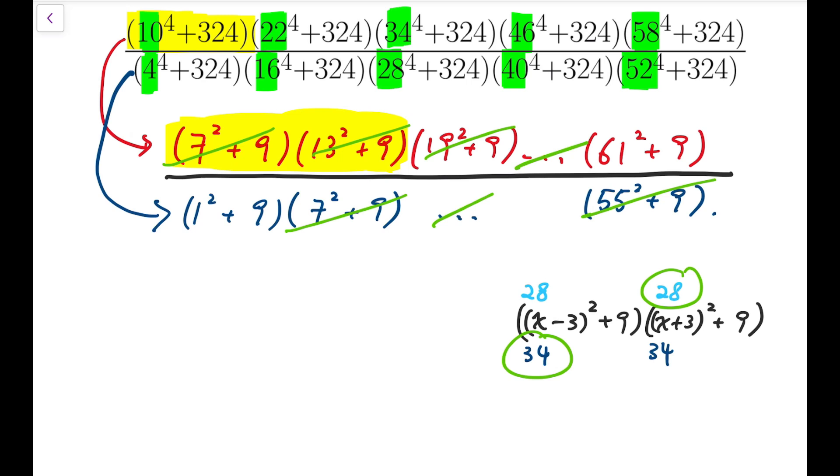And what's left will simply be the largest component, 61 squared plus 9, divided by the smallest component, which is 1 squared plus 9. Now, we can do that by hand. So, numerator is 3,730 divided by 10, and so our final answer is 373. Thank you.